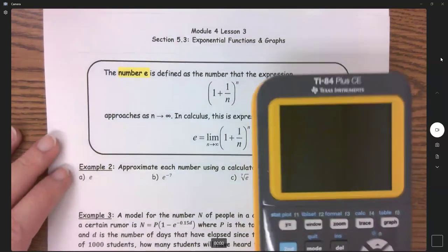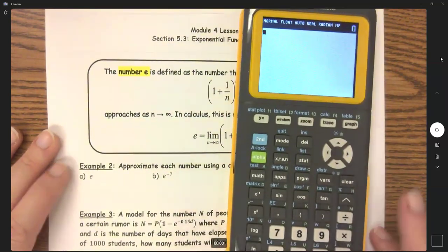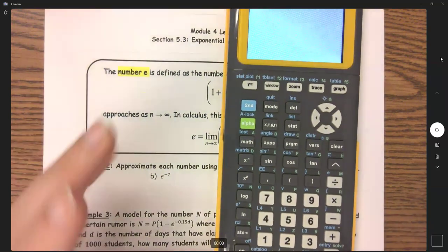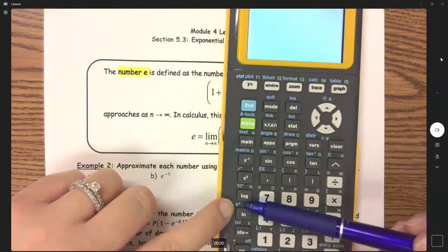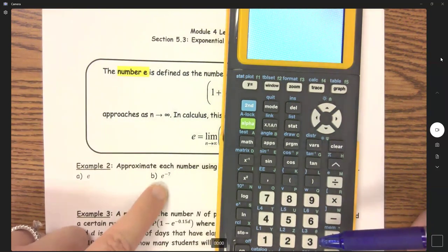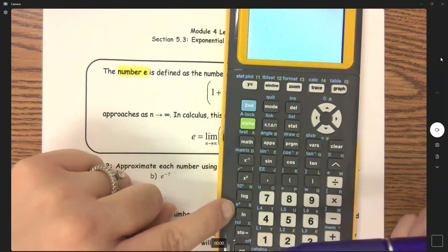And so let's put this into our calculator. There are two different places that you can evaluate e. The one that we're going to be using the most is this one right here, e to the x. But when you put in e to the x, it wants an exponent.